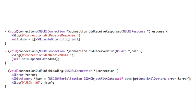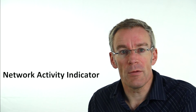Looking at these delegate methods: in connectionDidReceiveResponse, I allocate my NSMutableData object, which clears out old content or initializes it fresh. In didReceiveData, I keep appending data to the data object. Then I simply use the NSJSONSerialization class method jsonObjectWithData to convert the NSMutableData object into an NSDictionary, and once I have an NSDictionary I can do all sorts of things with it.